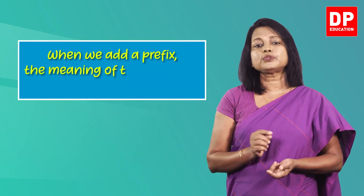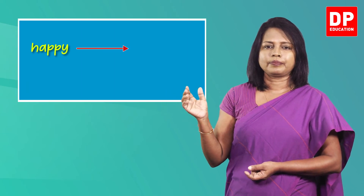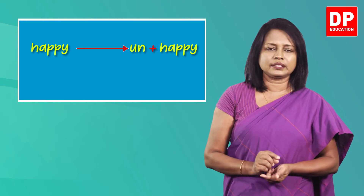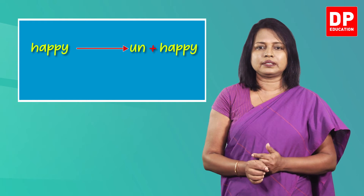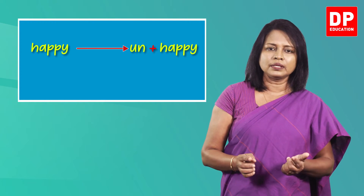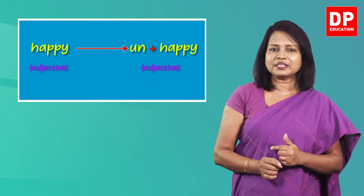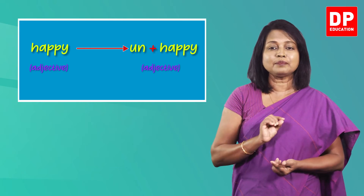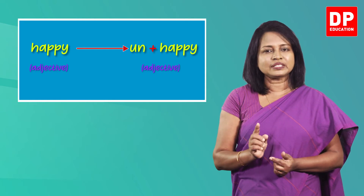Let's learn more about prefixes. When we add a prefix to a root word, the meaning of the root word changes. Look at this example — when you add the prefix 'un' to the root word 'happy', the meaning changes. It becomes the opposite. But as you can see, the word class does not change. Both 'happy' and 'unhappy' are adjectives. This meaning change does not always make the opposite — some prefixes make other changes in meaning, although the word class remains the same.